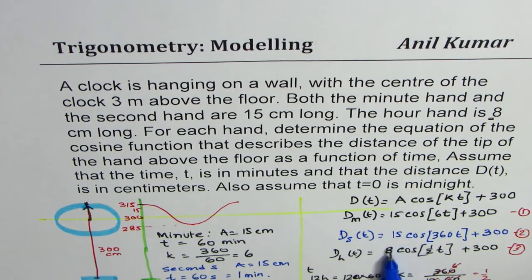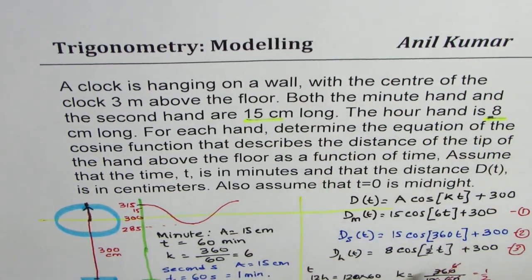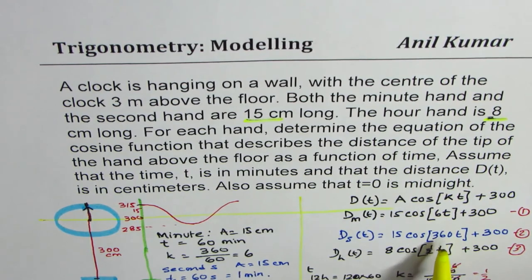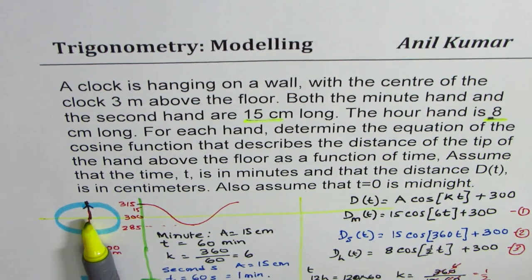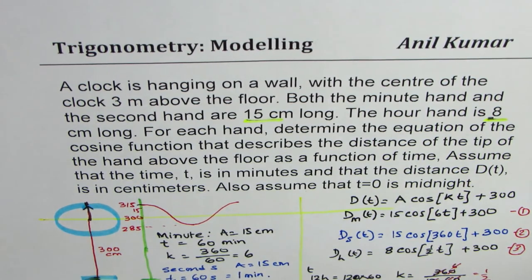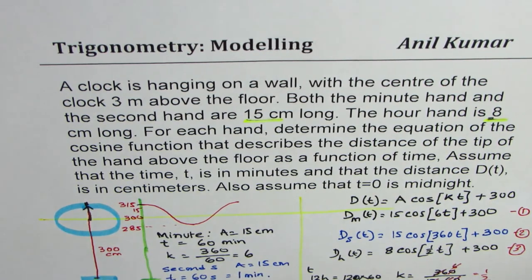I hope the concept is very clear. So basically, the amplitude is equal to length of the hand. And k is 360 divided by time it takes in minutes for one full circle. So that should help you to find the answer. And since the center is 300 centimeters above the ground, that gives you the height or the distance of the tip of the hand from the ground.